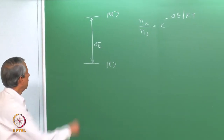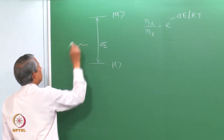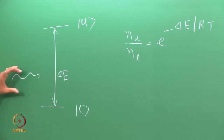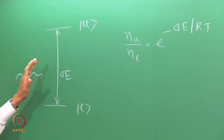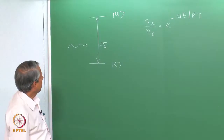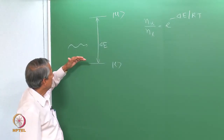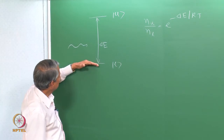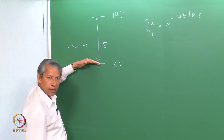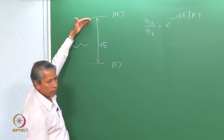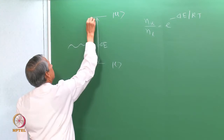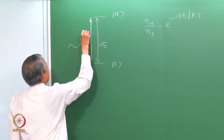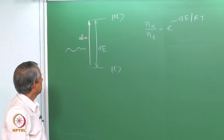Now if some radiation falls here which is matching with this energy gap and the selection rules are satisfied, then it can absorb radiation and the particles which are lying in the lower level can go from the lower level to the upper level. That is the absorption process.